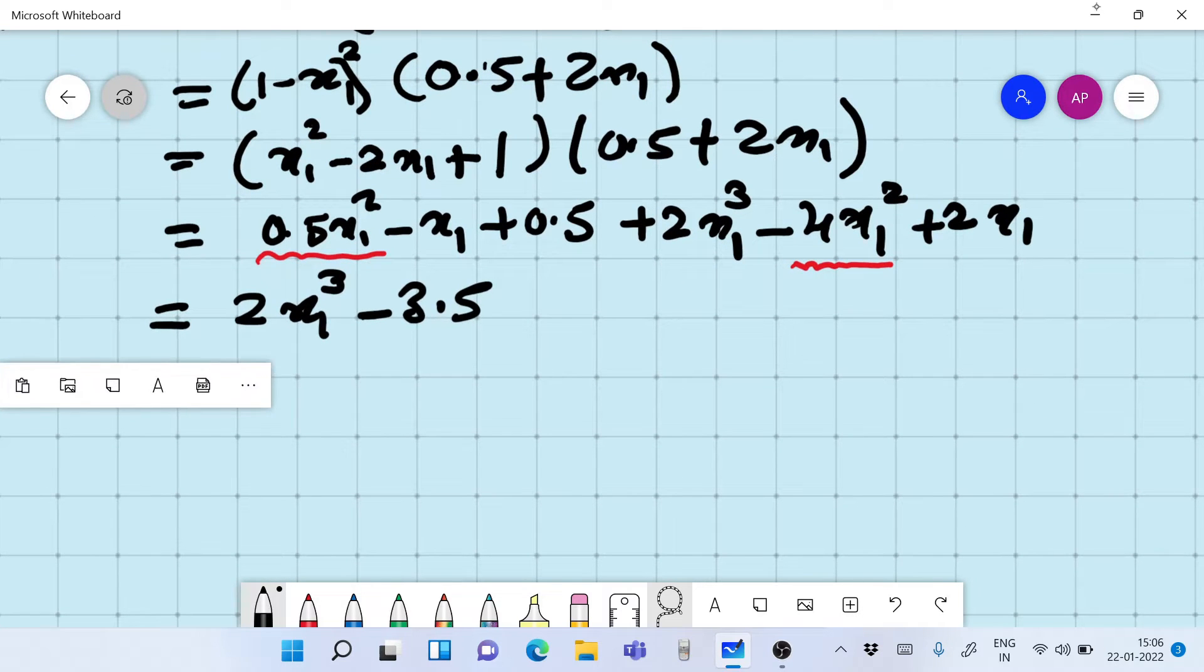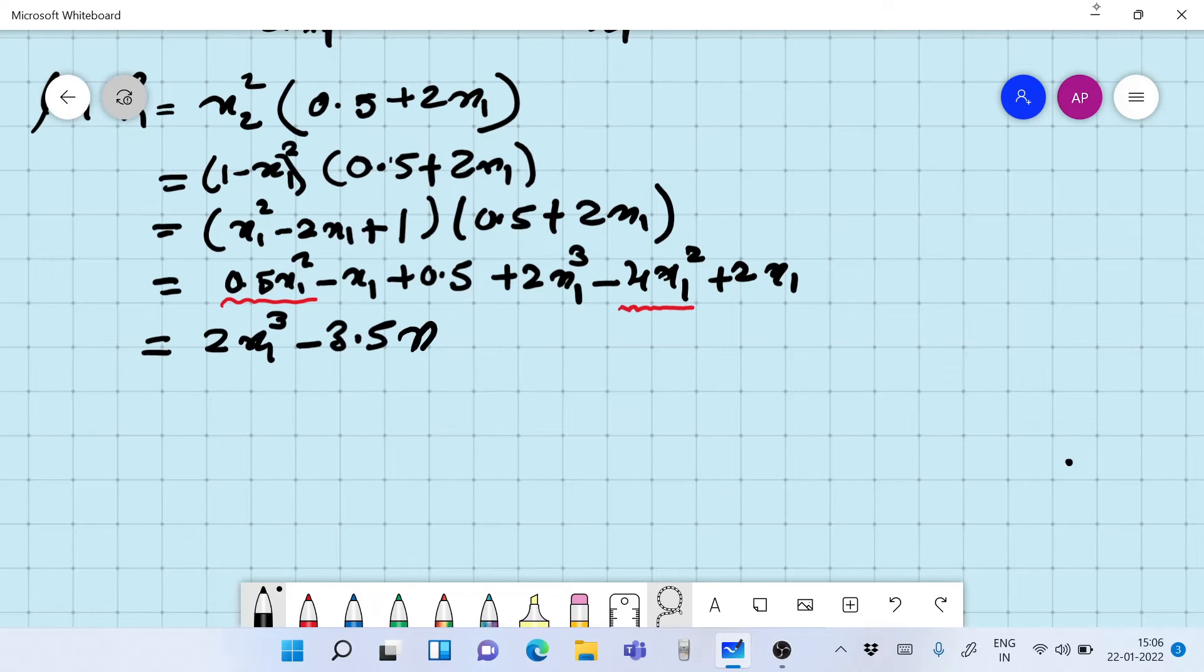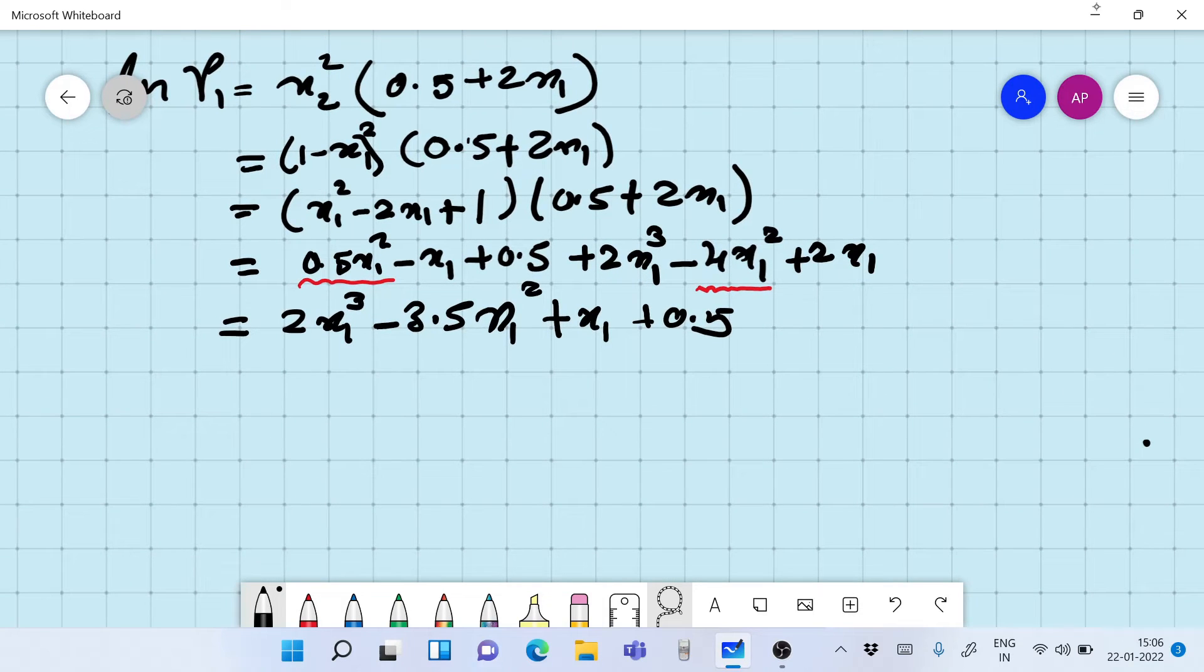We have 2x1 cube. That's the first one we have. Let's take x1 square now. The x1 square is going to be minus 4x1 square plus 0.5 x1 square. So we are left with minus 3.5 x1 square. And then we have 2x1 minus x1, so that's plus x1, and that's plus 0.5.